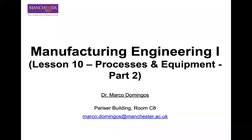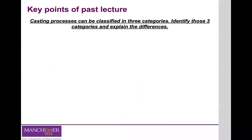Today is going to be the second part of the processes and equipment used in metal casting. As usual, just a brief recap of the main points of the previous lecture. Casting processes can be classified into three categories, and this classification is mainly done based on the type of mold and the patterns that are used to create your metal casted parts.